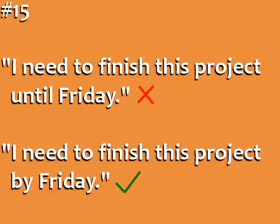Error number fourteen: 'I need to finish this project until Friday.' We use 'until' to talk about a continuous situation that will continue up to a certain moment — for example, 'I'm staying in the city until June,' where staying is a continuous action. Use the word 'by' to talk about a single action or event that will happen before a future moment; 'by' is often used with deadlines. So the correct sentence is: 'I need to finish this project by Friday.'